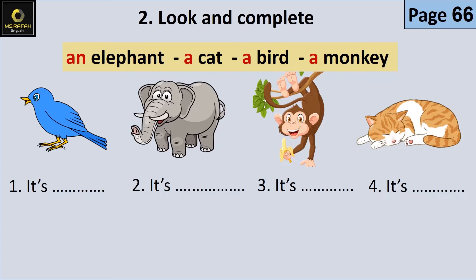Use 'A' with nouns starting with a consonant sound, and 'AN' with nouns starting with a vowel sound (A, E, I, O, U). It's a bird. — إنه طائر. It's an elephant. — إنه فيل. It's a monkey. — إنه قرد. It's a cat. — إنها قطة.